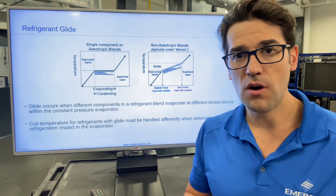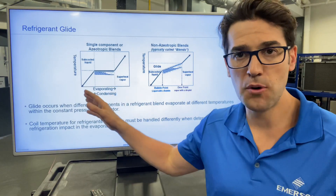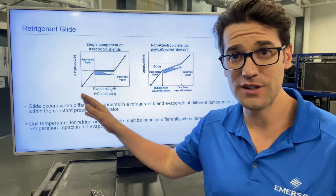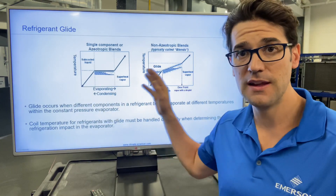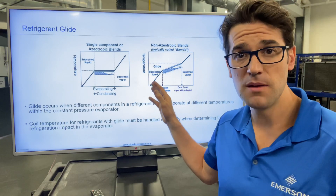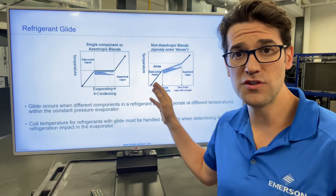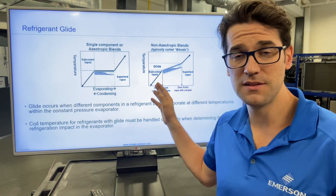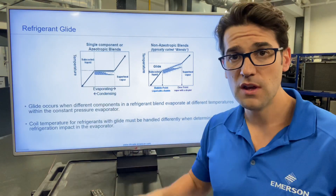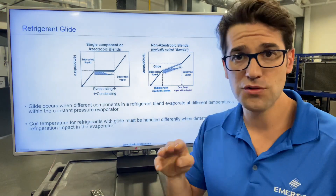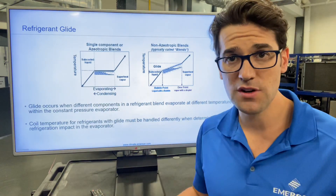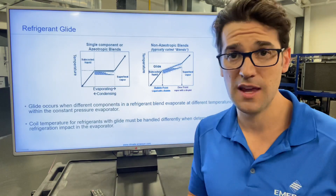I got a chart behind me here. I have a single component refrigerant like R22 and then a non-azeotropic, which is multiple refrigerant blends. With R22, when you're going through your evaporator or condenser at a constant pressure, you're going to have a constant temperature.